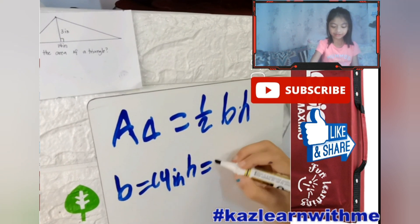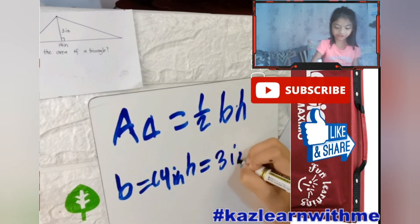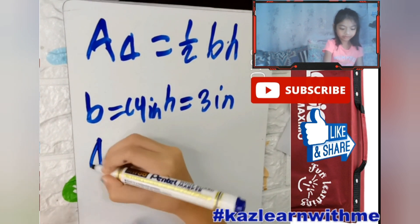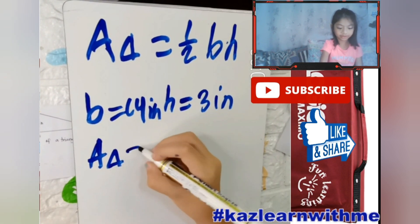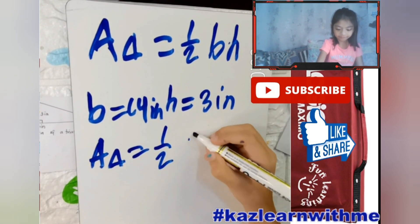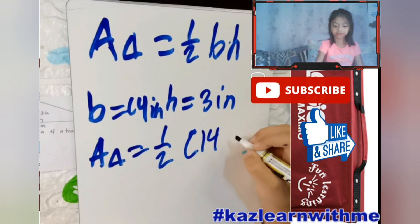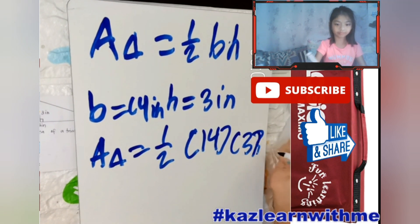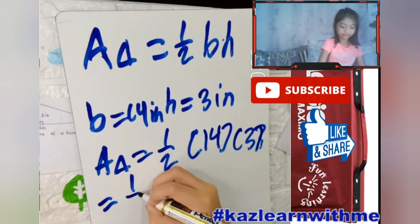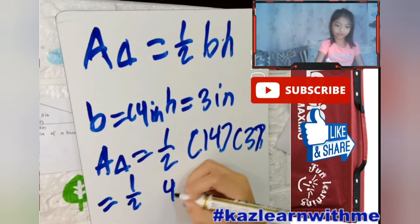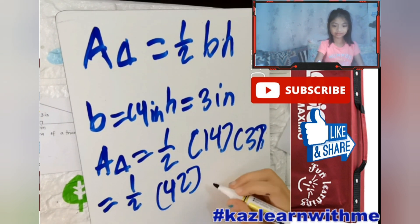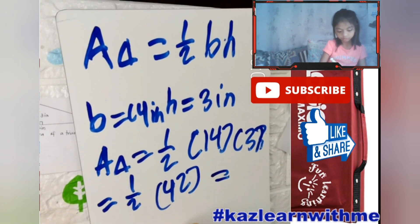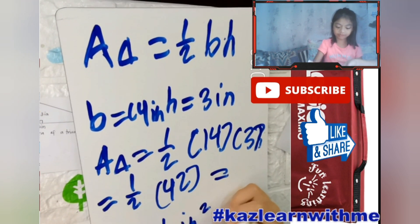Four inches. And then, the height is three inches. Area of a triangle equals one-half, and then fourteen times three equals one-half times forty-two. And then, one-half times forty-two equals twenty-one inches squared.